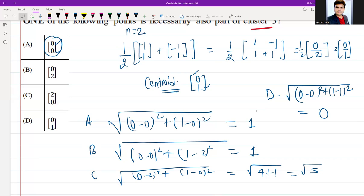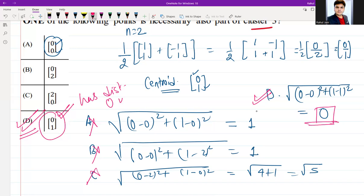So what I can conclude is that I need to reject option A, option B, option C. I need to follow option D because the point (0,1), that is option D, has a distance 0 from the centroid. If it is so, then it necessarily should be part of that cluster.